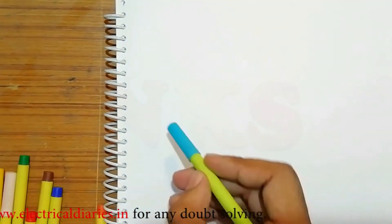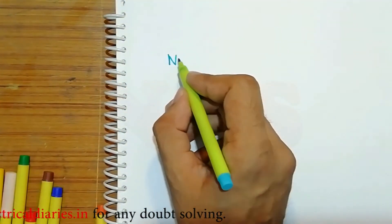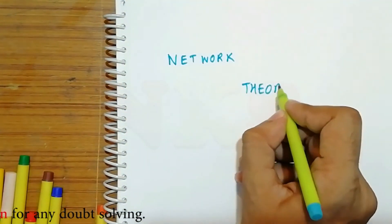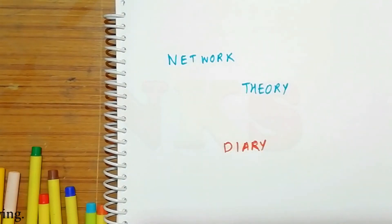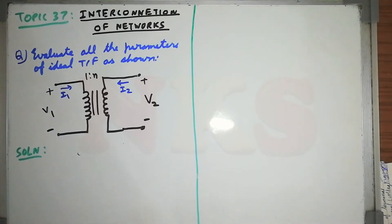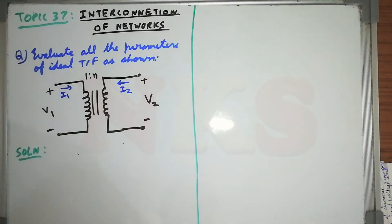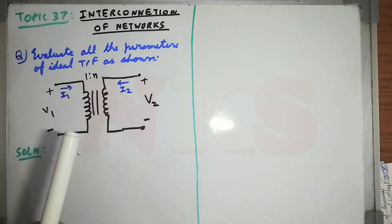This diary will contain all the topics for network theory, so please listen and see carefully all the list. Today we start with topic number 20 of 37, that is interconnection of networks. We will come back to this topic, but first we'll solve this problem, which will give you much more clarity.